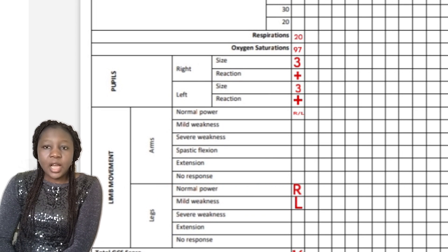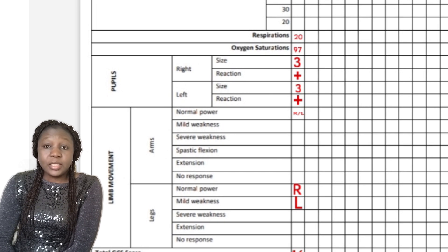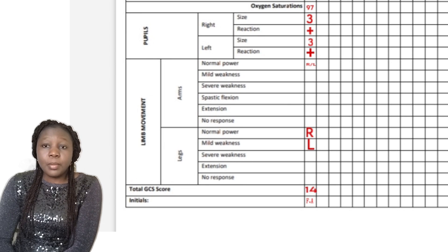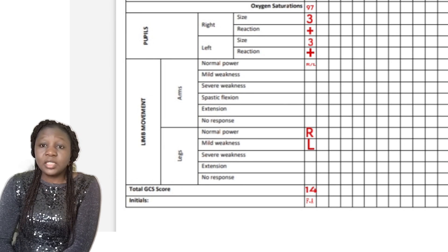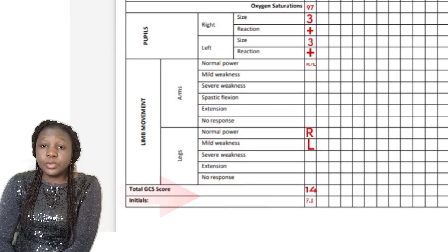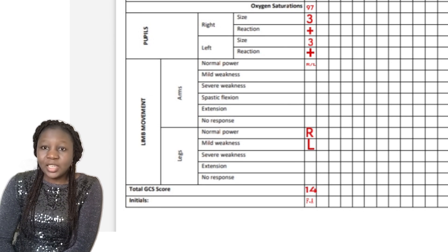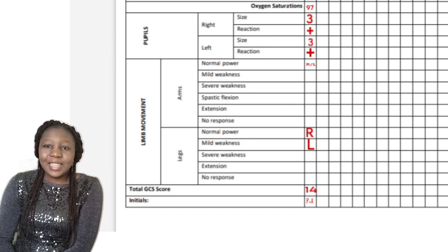The last part is to sum up the GCS score. For this patient we've been discussing, the total GCS score is 14. Write 14 in the box in front of total GCS score, then put your initials in the box in front of initials as well. And that is all about the GCS chart — thank you so much for watching, bye!